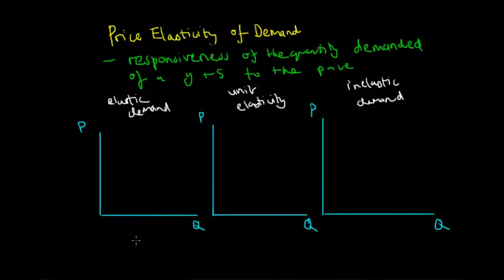In the previous lecture we talked about the law of demand and stated that the quantity of a good or service demanded varies inversely to price — so if the price of that good or service increases, the quantity demanded decreases. We talked about that, but we didn't talk about the sensitivity of demand in different markets, and that's where the concept of the price elasticity of demand comes in.